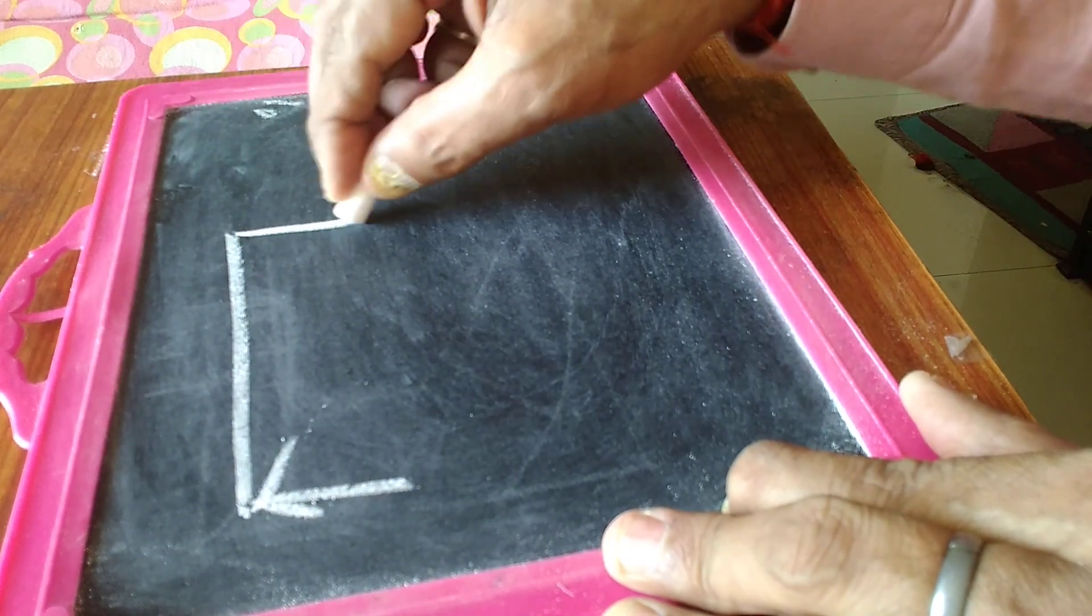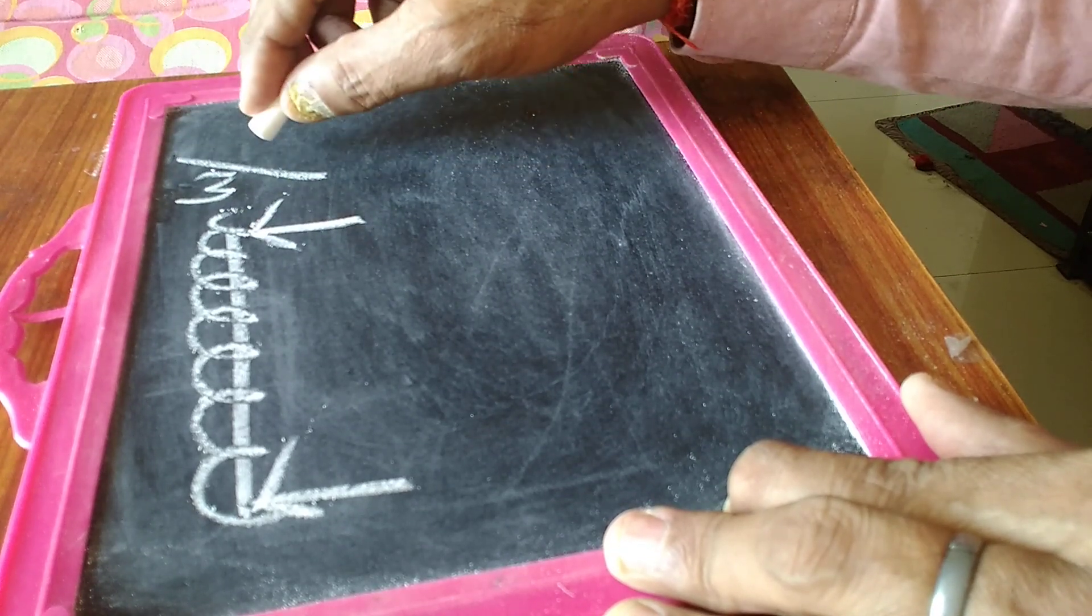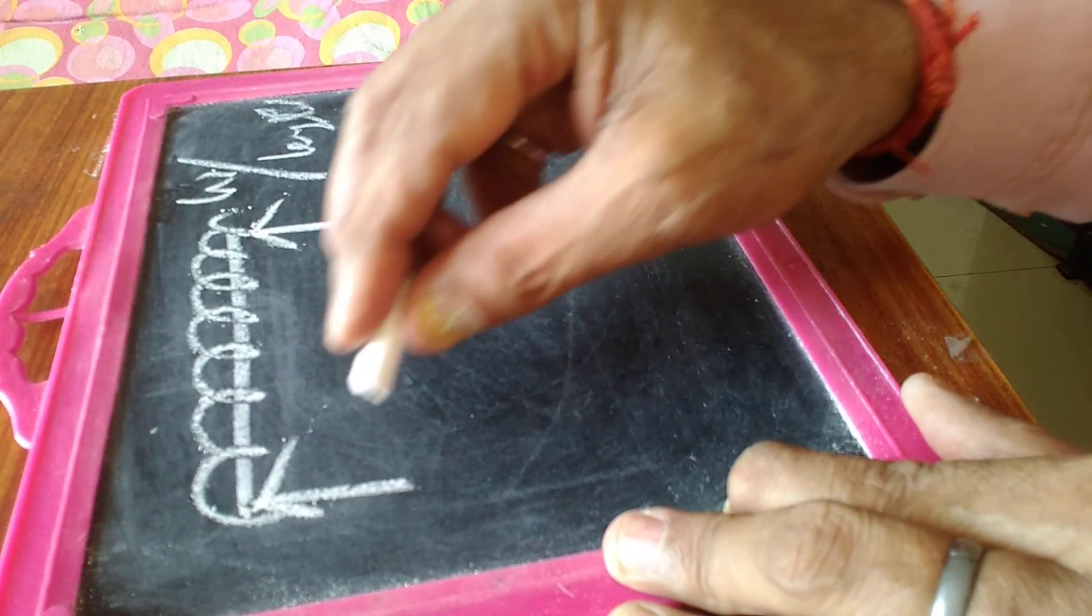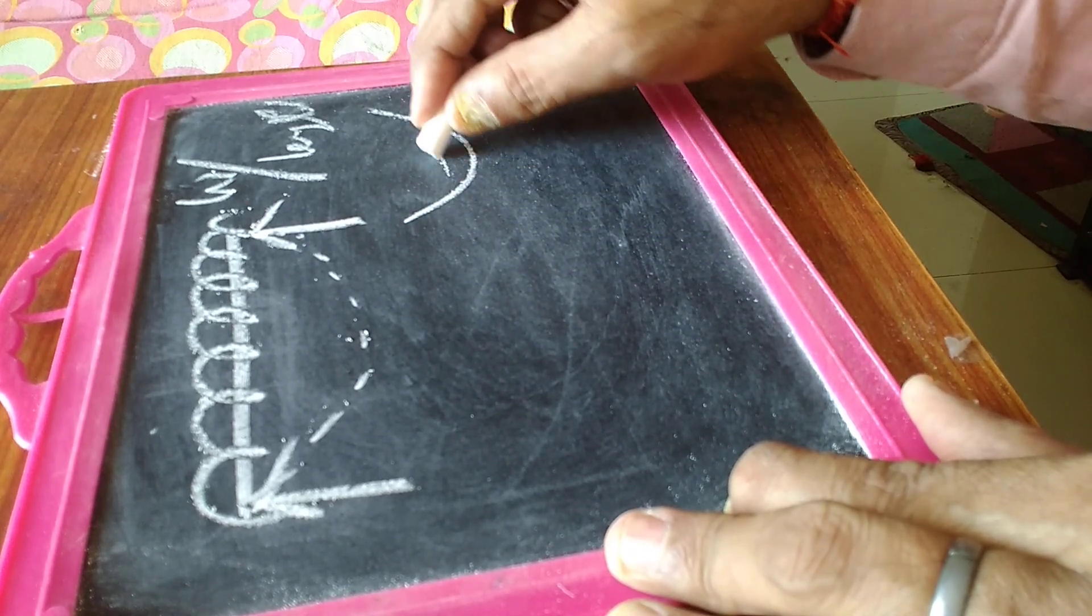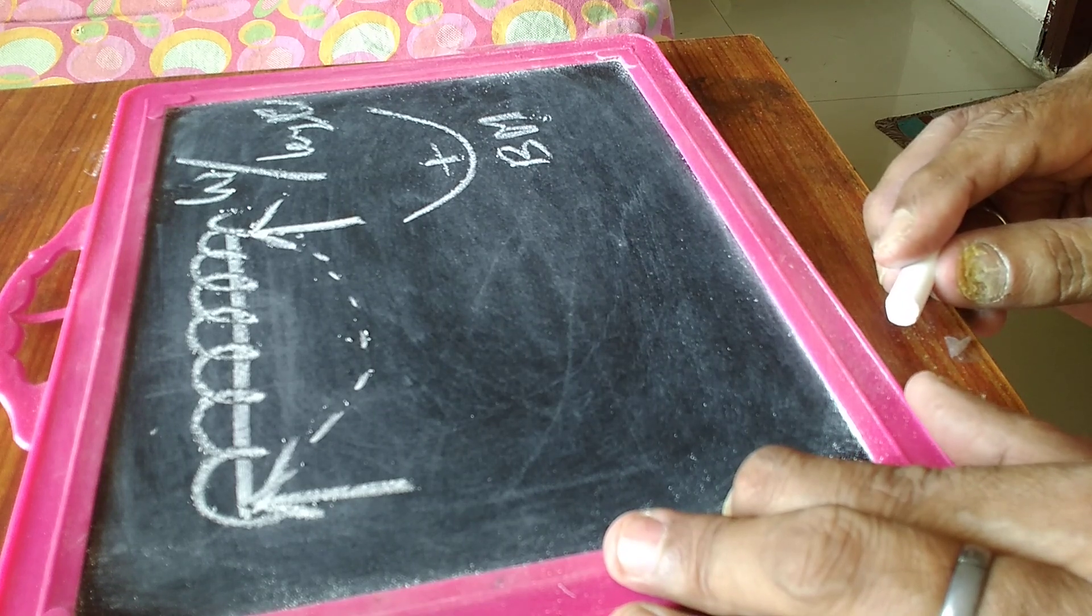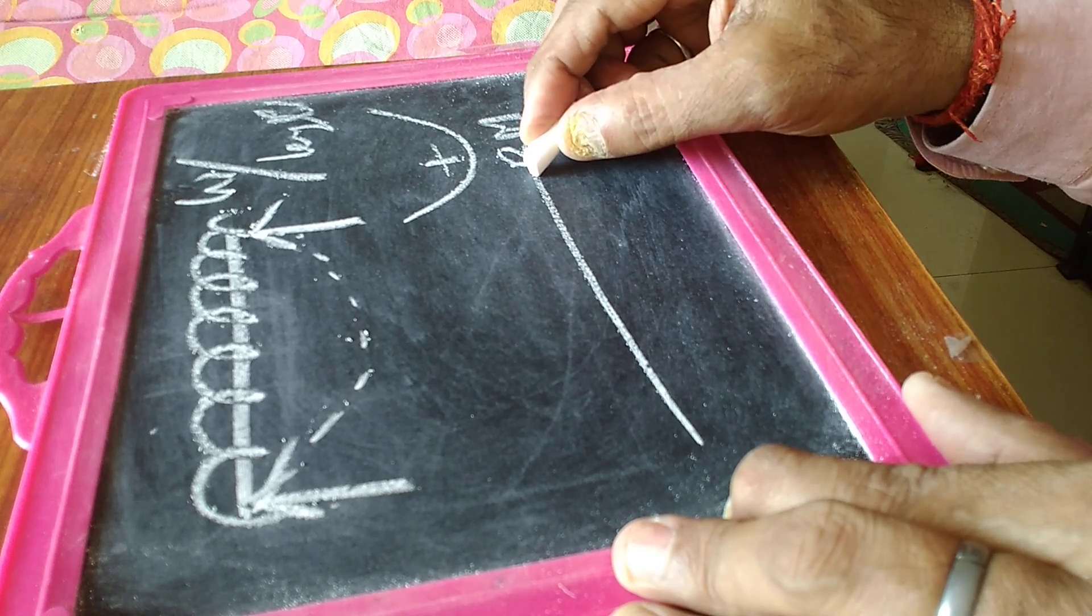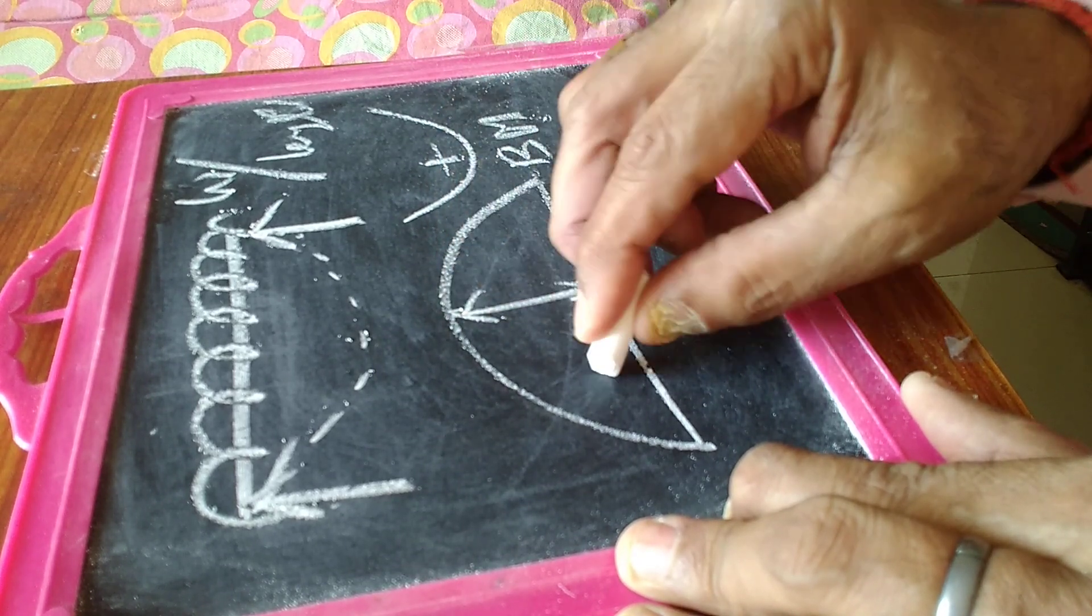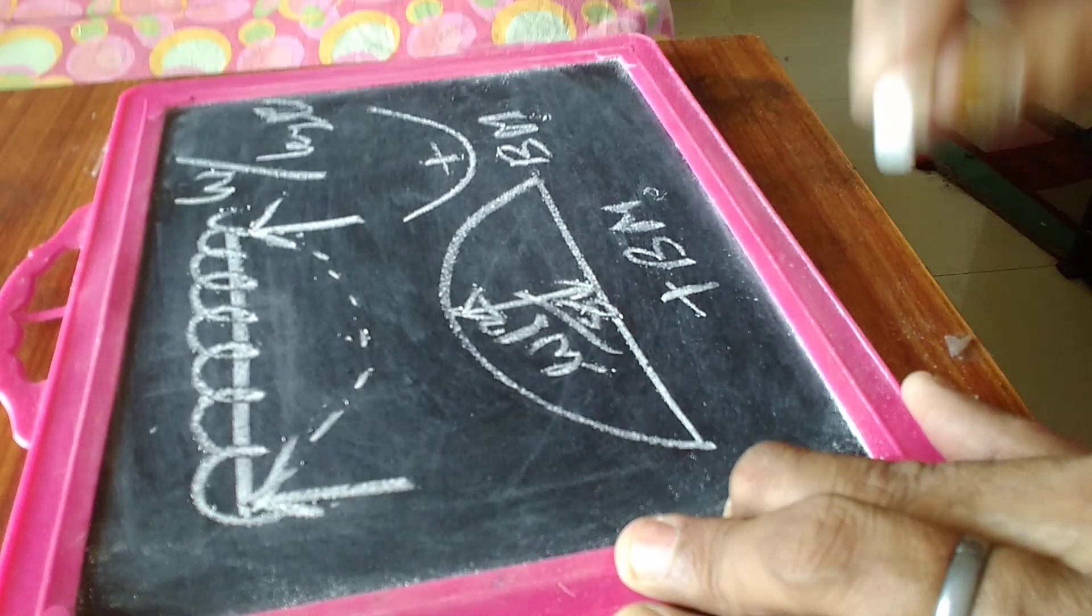This is a simply supported beam with UDL over it, W per unit length. Then after this loading, the shape will be like this. And you are already told that when the shape is sagging, then this is positive bending moment. And how will we draw this positive bending moment? Just draw a bottom line, and the shape will be like this. This is WL squared by 8. This is the positive bending moment due to sagging.